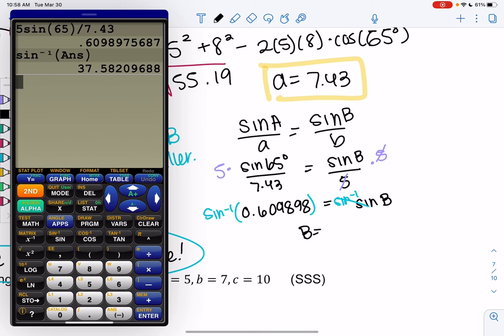Again, if you ended up using law of cosines, you're going to get about the same, but rounding might be slightly off. I think I got 37.6 with law of cosines.